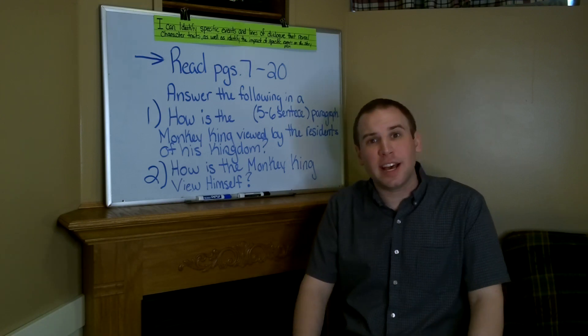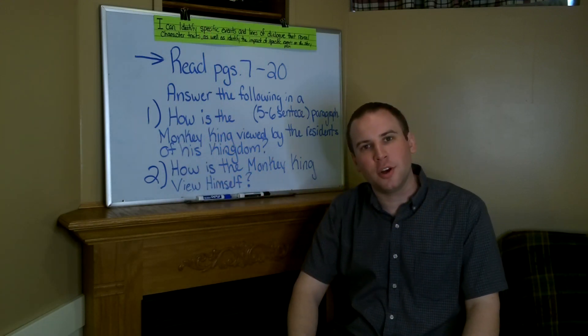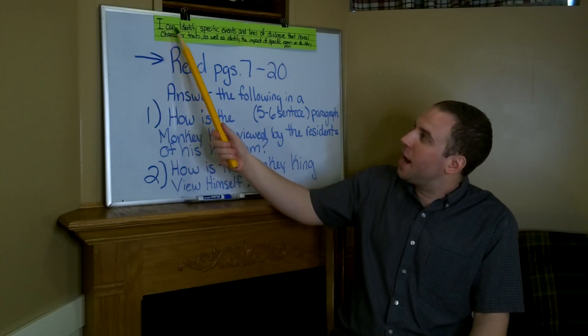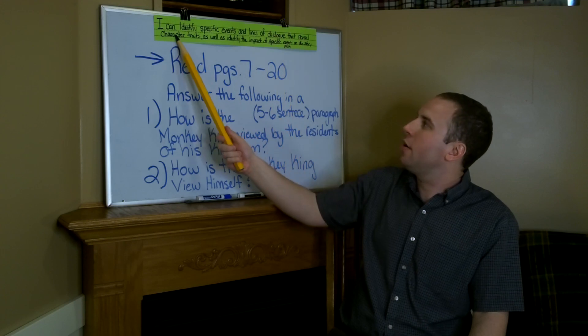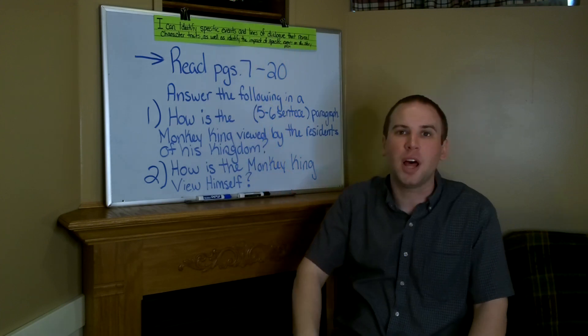For today's lesson, let's go ahead and identify our objective today. So go ahead and take out your Language Arts notebook. The objective, or our I can statement today, is I can identify specific events and lines of dialogue that reveal character traits, as well as identify the impact of specific events on the story plot.